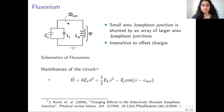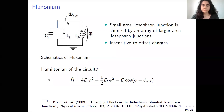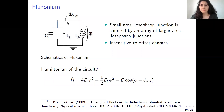Our next circuit is fluxonium. In addition to the elements in quantronium, we have a Josephson junction array, which behaves as an inductor. To control the circuit, we use external magnetic fields, and its Hamiltonian is also given here.